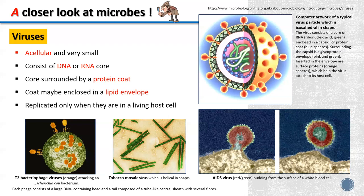Some viruses have a lipid envelope which they steal from the membranes of the host cell. An example of an envelope virus is the influenza virus, which causes influenza or the flu. Another famous example is SARS-CoV-2, responsible for the COVID-19 pandemic. Here are some examples of viruses: the virus particle packs its genome — DNA or RNA — inside capsid proteins and an envelope. This is the bacteriophage, which infects bacteria. This is the tobacco mosaic virus, found in plants. And this is HIV, which buds from the surface of a white blood cell of the host.